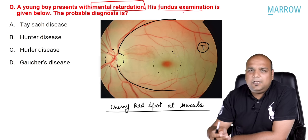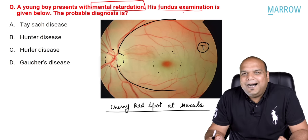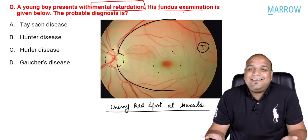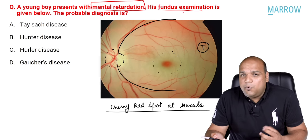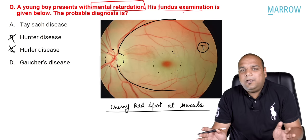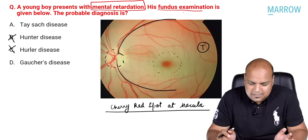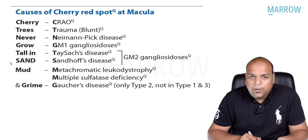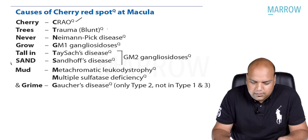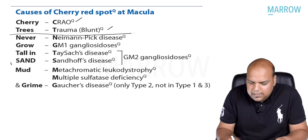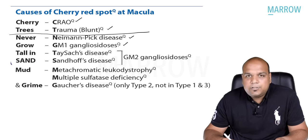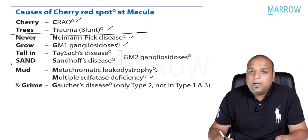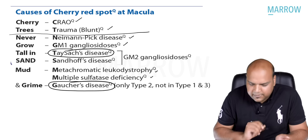As soon as we note a cherry red spot at the macula, we know the causes — mnemonic: 'Cherry trees never grow tall in sand, mud, and grime.' C = central retinal artery occlusion; T = trauma (blunt); N = Niemann-Pick; GM = GM2 gangliosidoses (Tay-Sachs and Sandhoff); M = metachromatic leukodystrophy, multiple sulfatase deficiency; G = Gaucher's. Hunter and Hurler (MPS) are nowhere in the picture. We are left with two options: Tay-Sachs and Gaucher's disease.